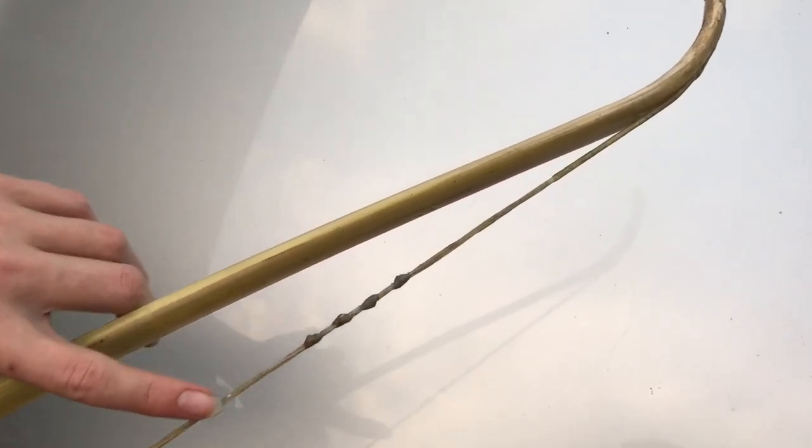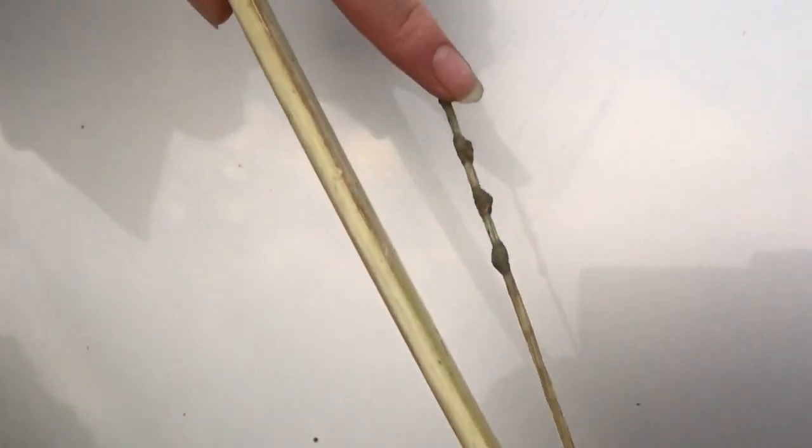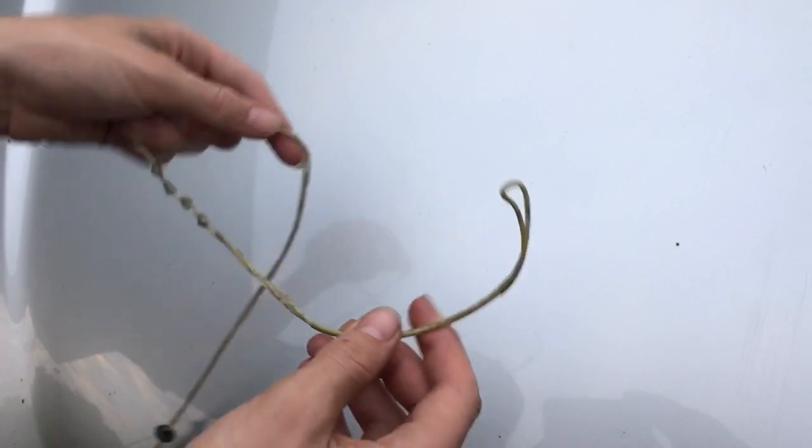The way we adjust the string are with these knots, and you'd be amazed how much slack these knots will take up. We will tie two knots, one on either side of the string.